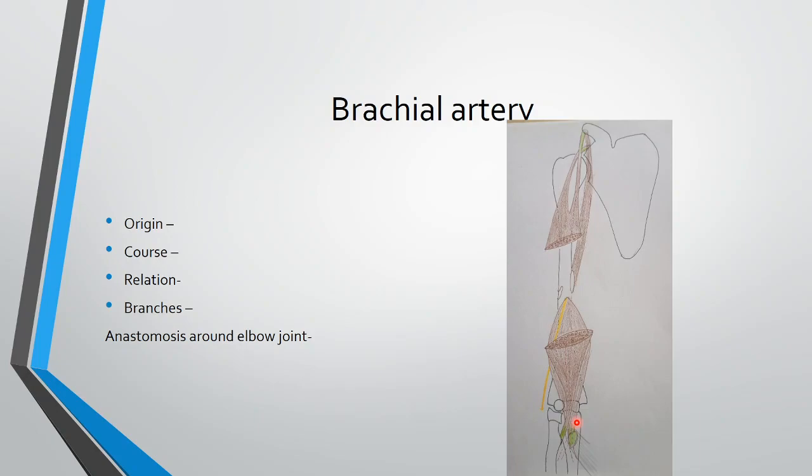Medially in the upper part there is the ulnar nerve and basilic vein, and in the lower part there is the median nerve. Laterally it is related to coracobrachialis and biceps, and in the lower part to the tendon of bicep at the elbow. Branches of the brachial artery include: profunda brachii — one of the largest branches; superior ulnar collateral artery, which makes anastomosis around the elbow joint; nutrient artery; inferior ulnar collateral artery; and two terminal branches. These vessels form an arterial circle around the elbow due to the branches of profunda brachii, brachial artery, and terminal branches of the ulnar and radial arteries.